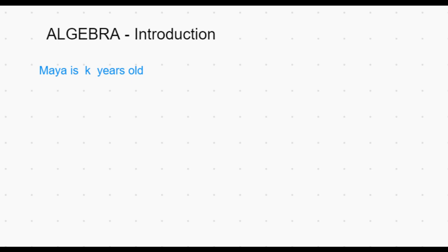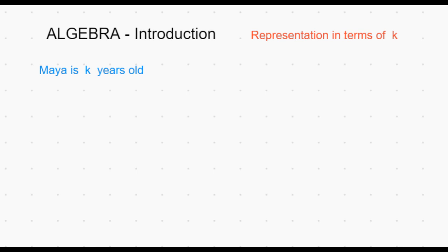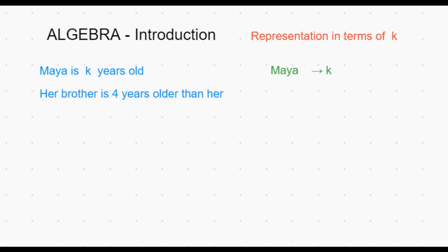Maya is K years old. Here Maya's age is represented in terms of K. K is an unknown variable and Maya's age is given to be K years old. Her brother is 4 years older than her, which means her brother becomes K plus 4. Notice that everybody's age is now represented in terms of K. So this is representation of an unknown in terms of a known variable.